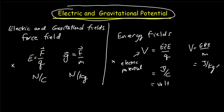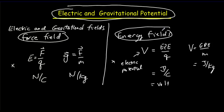The key thing to understand is that if you understand force fields, then you're going to understand electric and gravitational potential, because they're just energy fields and they work the same. The big difference is that energy fields are a little bit simpler, because energy fields are scalar — energy is a scalar — whereas force fields are vector. It's a little harder to add up vectors than scalars, but if you understand one, you'll understand the other.